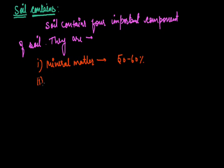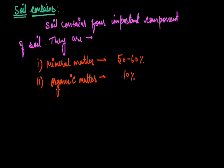The second component of soil is organic matter, which is present in soil at about 10 percent. This organic matter is again divided into two types: living organisms and decomposed matter.